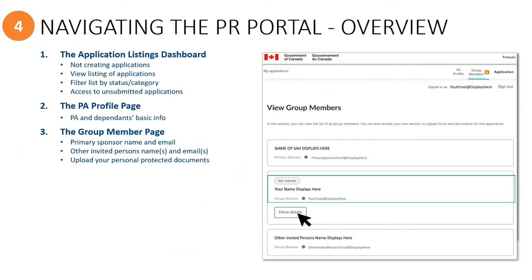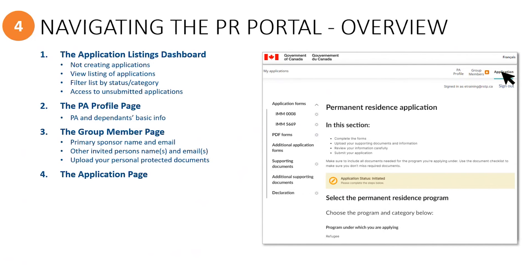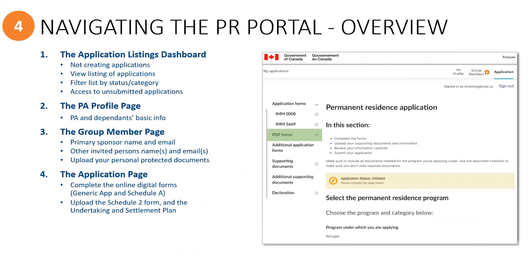The sponsor assessment form and your ID documents — this section can only be used and seen by yourself and the primary sponsor. The application page is where you will complete the online digital forms, such as the generic application and Schedule A form, and you will upload signed PDF forms such as the Schedule II and the Sponsorship Undertaking Settlement Plan.